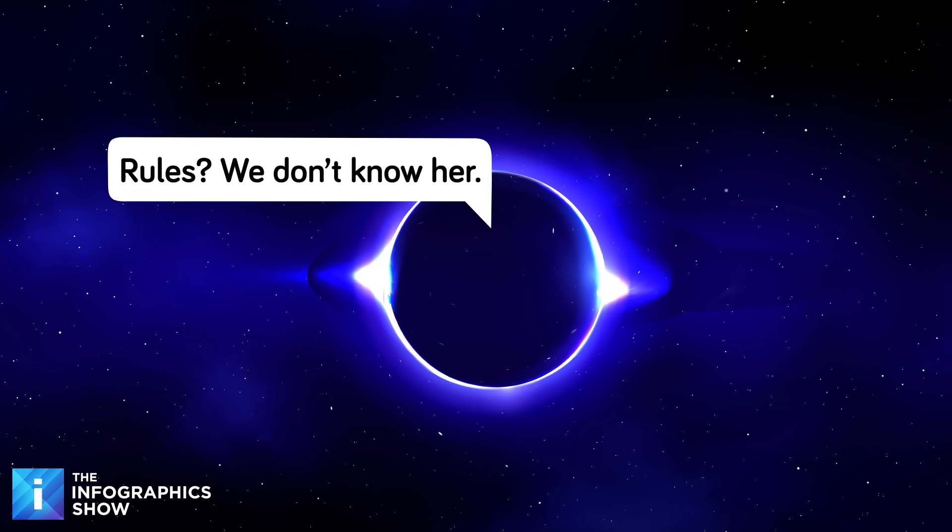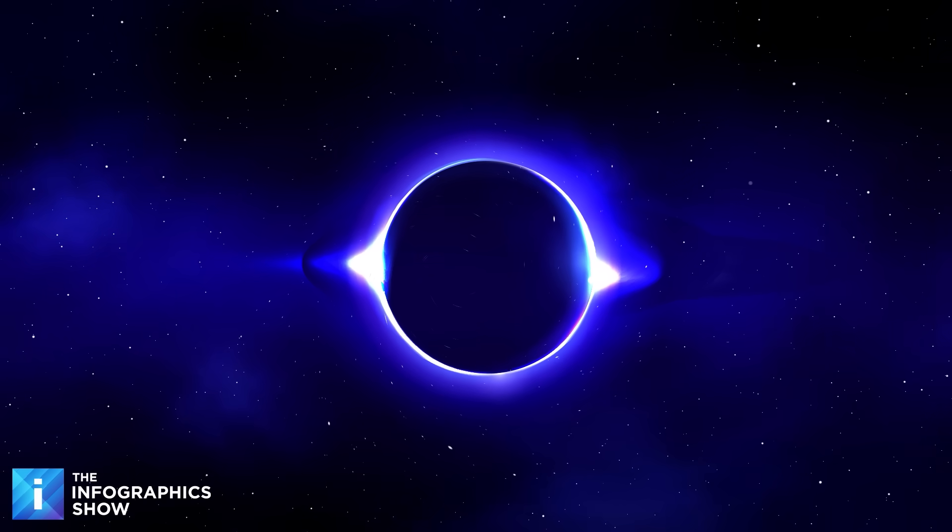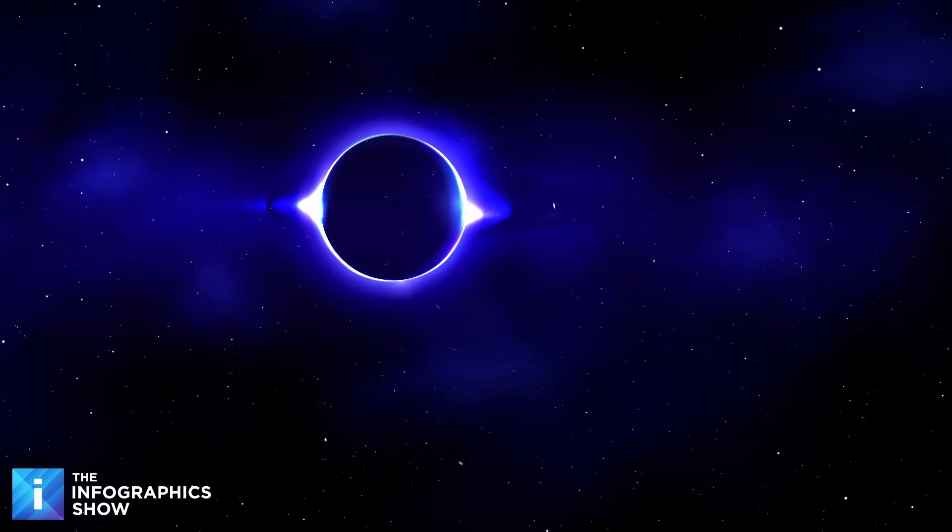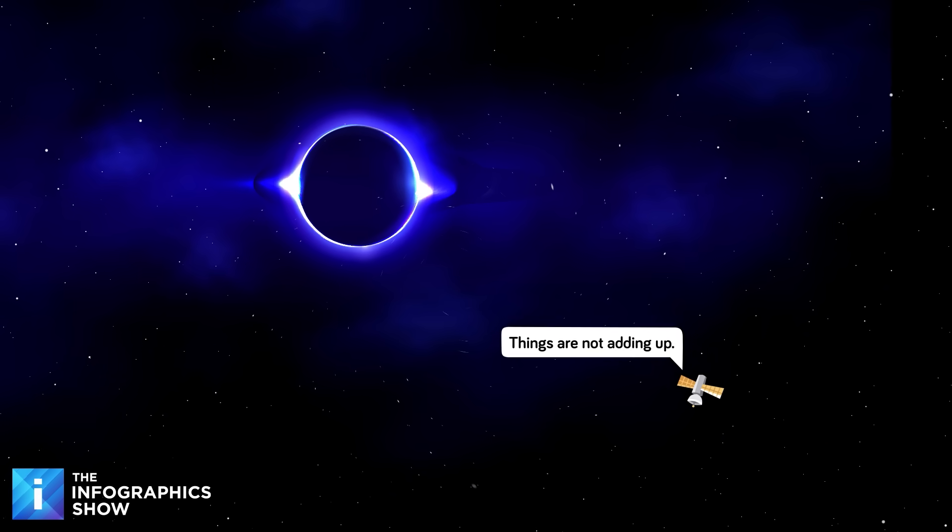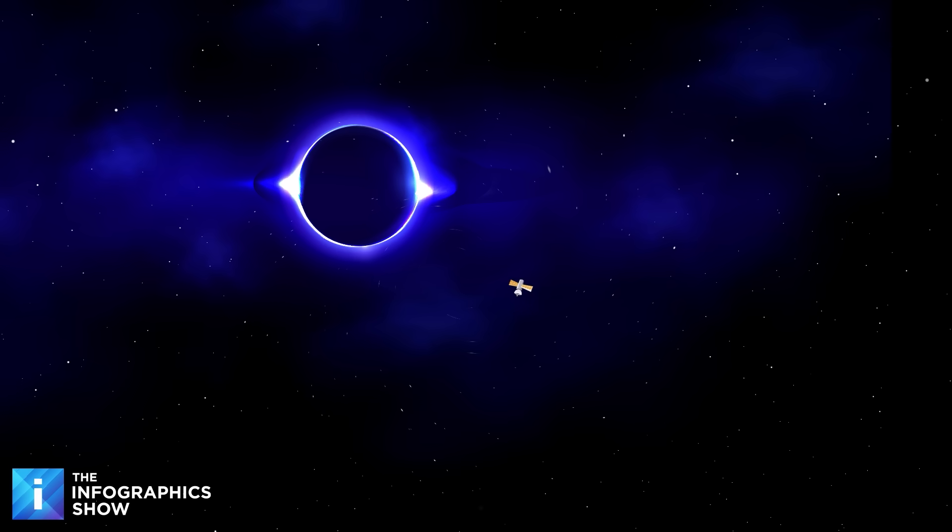But black holes seem to violate this rule completely. When something falls into a black hole, all information about it appears to be erased forever. This creates what physicists call the information paradox. Either quantum mechanics is wrong, or our understanding of black holes is incomplete, or reality itself works in ways we can't comprehend. And all three are more than plausible.